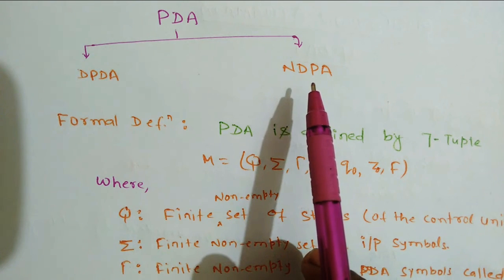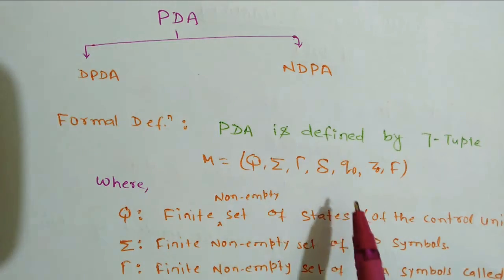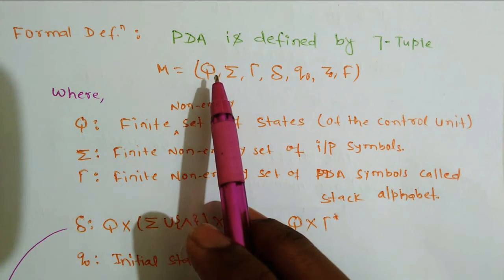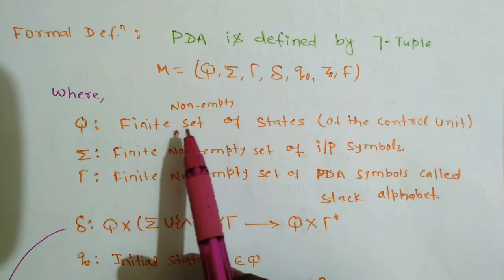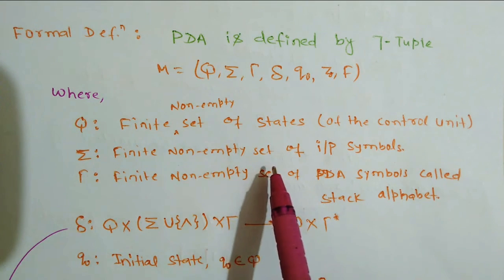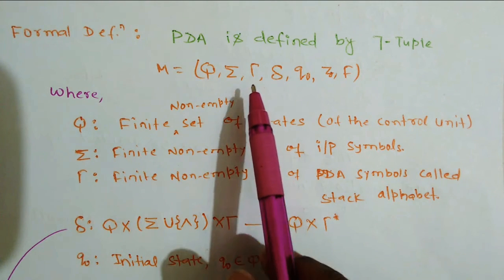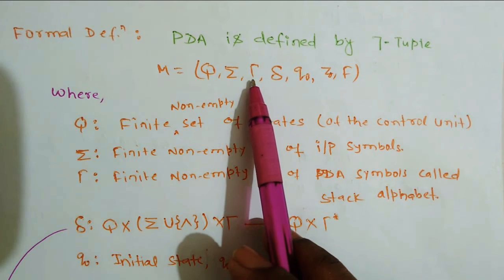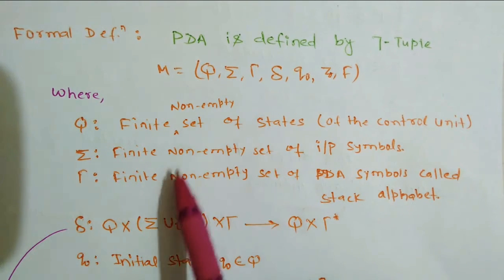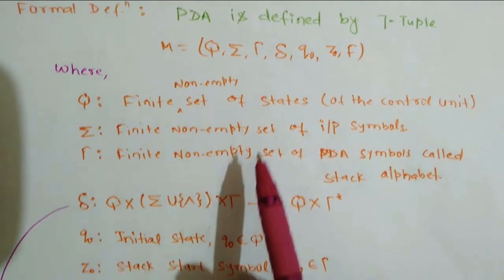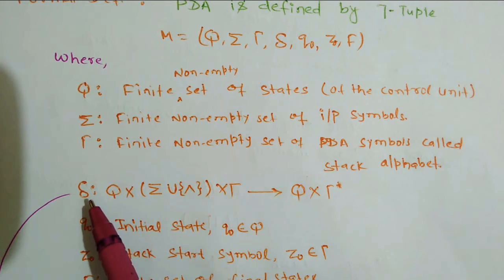Let's define PDA by seven tuples. Q represents a finite non-empty set of states. The next symbol is a finite non-empty set of input symbols. This is an extra tuple in PDA compared to finite state machines. The next symbol represents PDA stack symbols, called the stack alphabet, which is also a finite non-empty set.